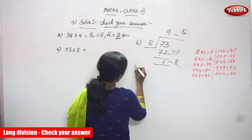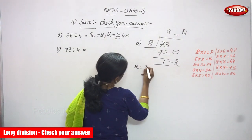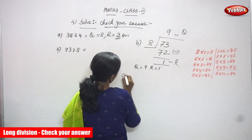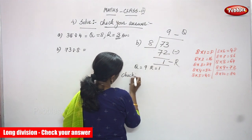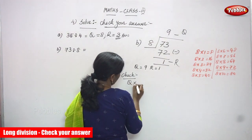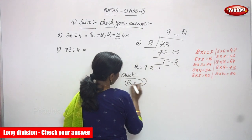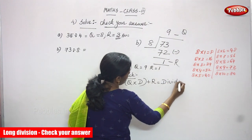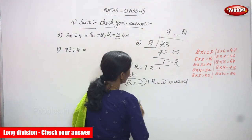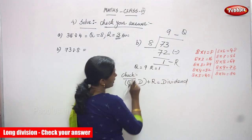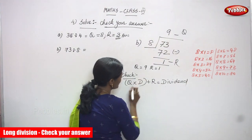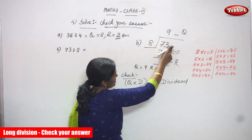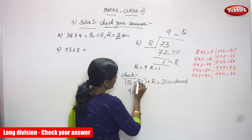So quotient is 9 and remainder is 1. Now you must do the check method. The check formula is: (quotient × divisor) + remainder = dividend. Now you are going to substitute the answers in the formula. Quotient Q is equal to 9, divisor is 8.